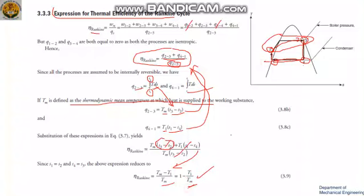Here T1 is the minimum temperature in the cycle, and Tm is the mean thermodynamic temperature at which heat is supplied. So we have derived the expression for thermal efficiency of the Rankine cycle. That's all for the day, thank you.